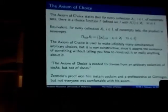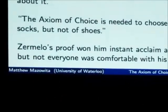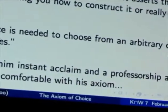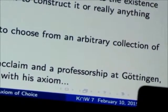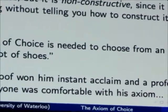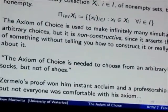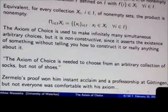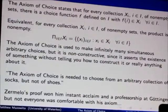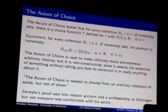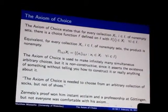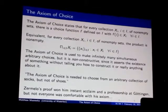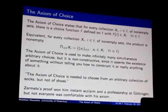The proof of the well-ordering theorem using the axiom of choice won this guy instant acclaim and a professorship at Göttingen, where Hilbert was, the best mathematician of the day. But not everybody was comfortable with this axiom. He proved that, given this axiom of choice, every set can be well-ordered. So there is some next decimal number after pi, whatever it is. You can't describe it because it's non-constructive. It turns out that the axiom of choice is entirely equivalent to the well-ordering theorem.